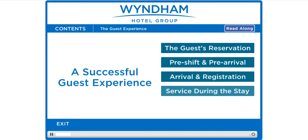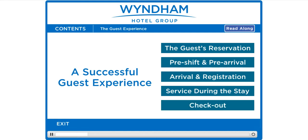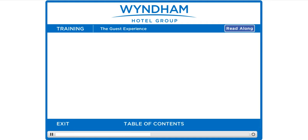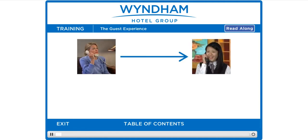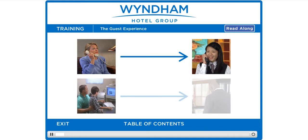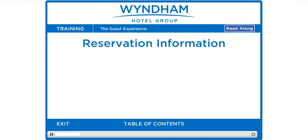Click on these topics in order to progress through a successful guest experience. The beginning of the guest's experience is the reservation process. Accuracy is very important here because the information gathered will be used throughout the guest's experience, from registration to checkout. Here is the vital information you'll need to record accurately.